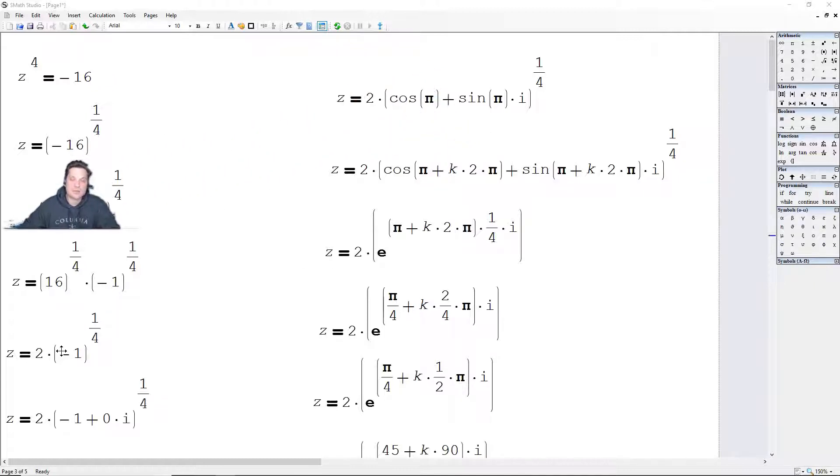You just take the 4th root on both sides, so it basically isolates the z, giving you on the right side negative 16 raised to the 1/4. Write the negative 16 as 16 times negative 1 to the 1/4. Distribute that 1/4 to each factor individually, getting 16 to the 1/4 times negative 1 to the 1/4.